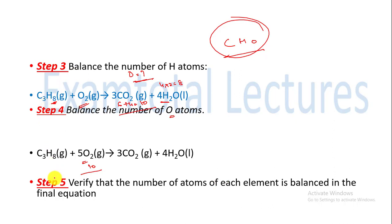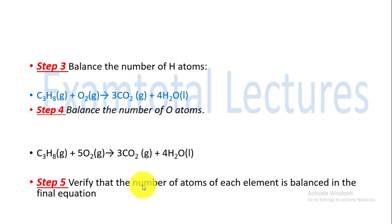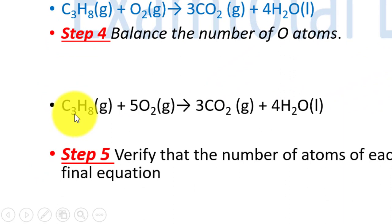To balance oxygen, we need 10 oxygen atoms on the reactant side, so we write the coefficient 5 before O2 (5 × 2 = 10). We then verify: carbon, hydrogen, and oxygen are all balanced on both the reactant and product sides. This gives us the final balanced chemical equation for propane combustion: C3H8 + 5O2 → 3CO2 + 4H2O. The rule is to balance carbon first, then hydrogen, and finally oxygen.